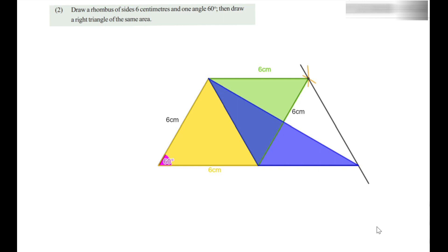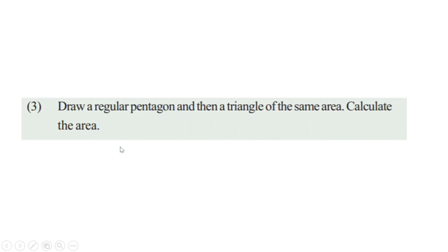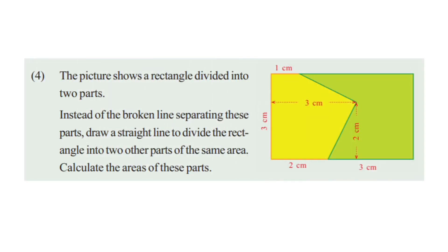Let us remember what we have learned today: we learned how to draw a triangle having the same area of a quadrilateral. Now for your homework from page 15 of your textbook: the third problem asks you to draw a regular pentagon and then a triangle of the same area, and calculate the area. Each angle of a regular pentagon is 108 degrees — take any side, take 108 degrees, and draw the regular pentagon, then convert it into a triangle and use the base and height to find the area. The next problem: the picture shows a rectangle divided into two parts by a broken line — draw a straight line instead to divide the rectangle into two other parts of the same area, and calculate the areas.